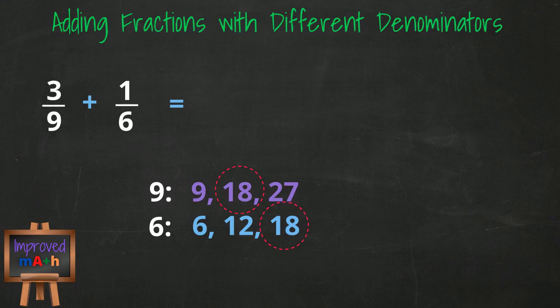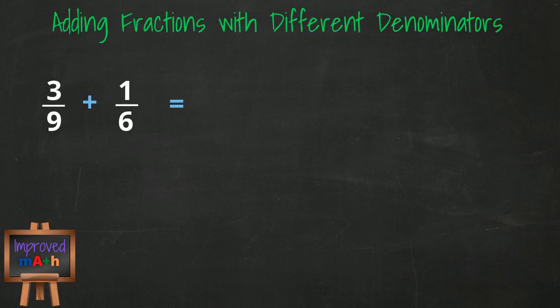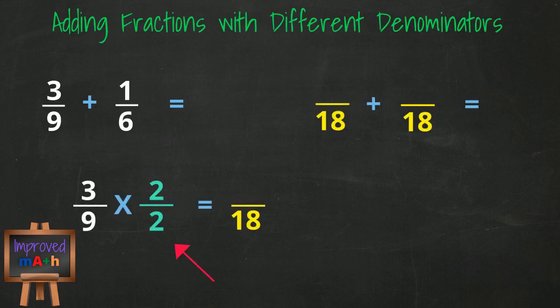We need to convert 3 over 9 to an equivalent fraction with a denominator of 18. If we look at the denominator of 9, we would have to multiply it by 2 to equal 18. That means we have to multiply the numerator by 2 also, because what you do to the top, you must also do to the bottom. 3 times 2 equals 6, so our first fraction is converted to 6 over 18.